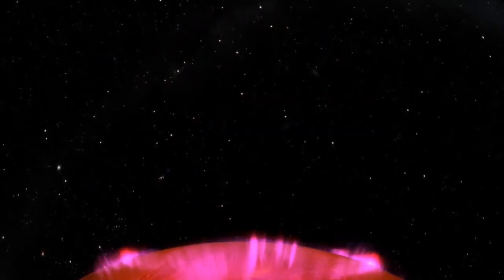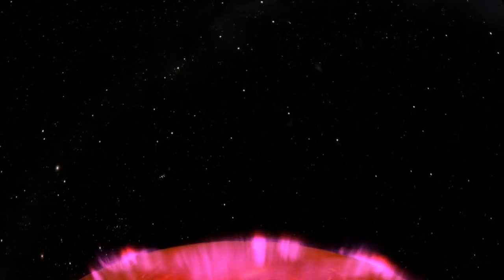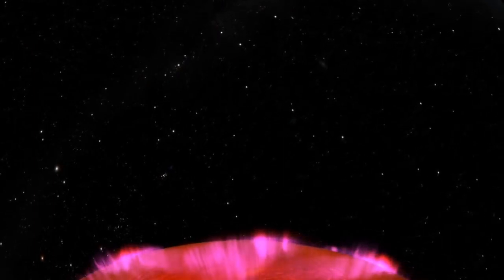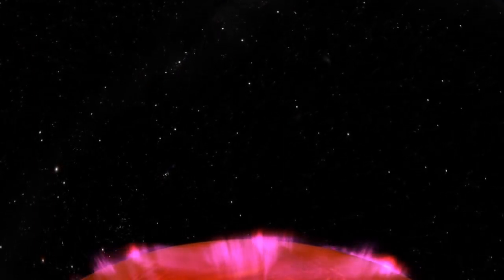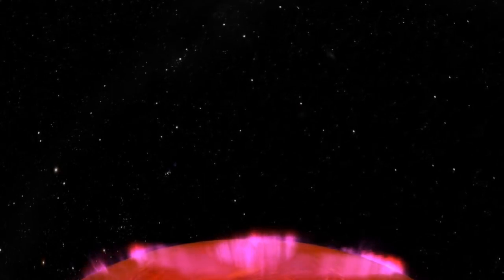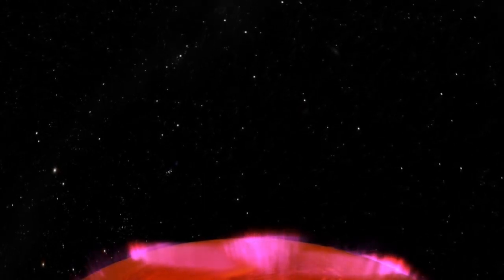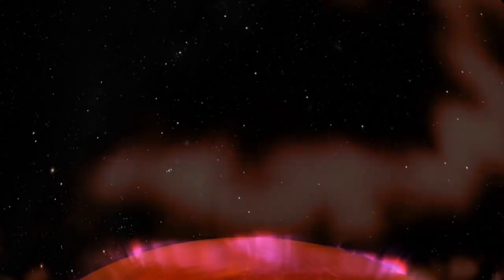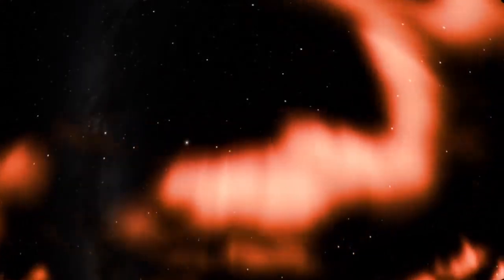As electrons spiral down into a brown dwarf's atmosphere, they produce radio emissions and excite hydrogen atoms. Unlike the green auroras from oxygen, the hydrogen atoms in a brown dwarf emit a glowing pink light. These auroras are about a million times brighter and more powerful than auroras on Earth.